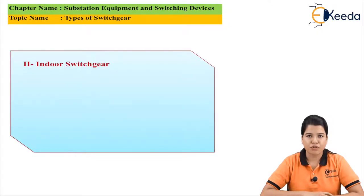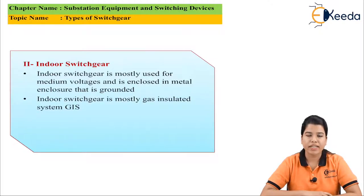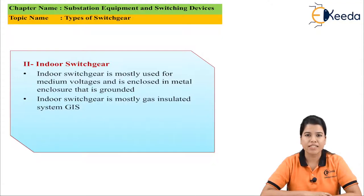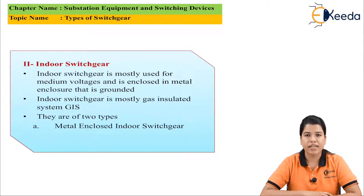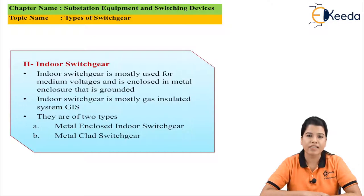The second type is indoor switchgear. Indoor switchgear is mostly used for medium voltage applications and it is enclosed in a metal enclosure, which is mostly grounded. Indoor switchgear basically consists of a gas insulated system. It is of two types: metal enclosed indoor switchgear and metal clad indoor switchgear. The gas insulated system uses SF6 gas, that is sulfur hexafluoride, which has very superior dielectric properties.